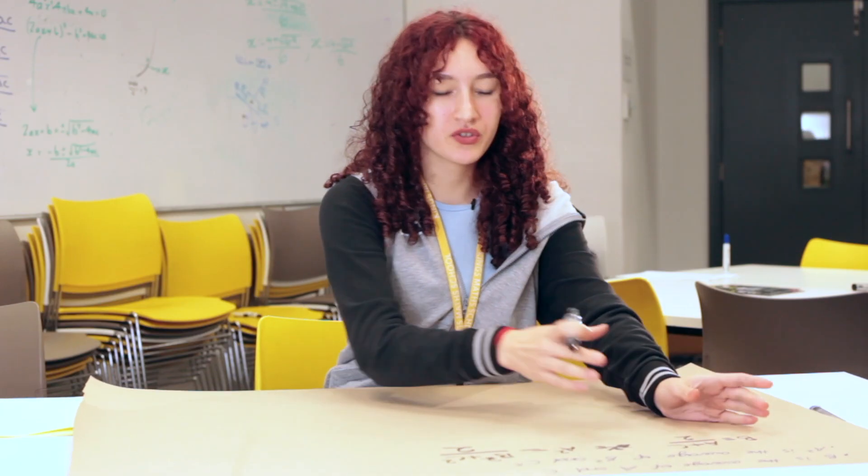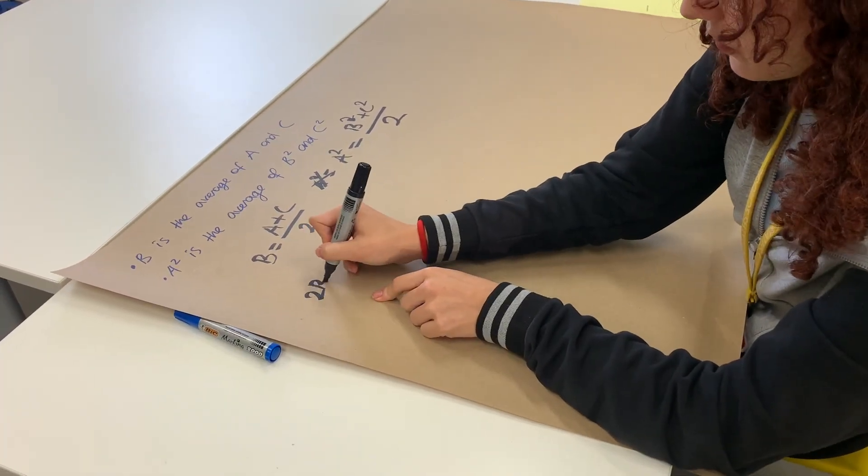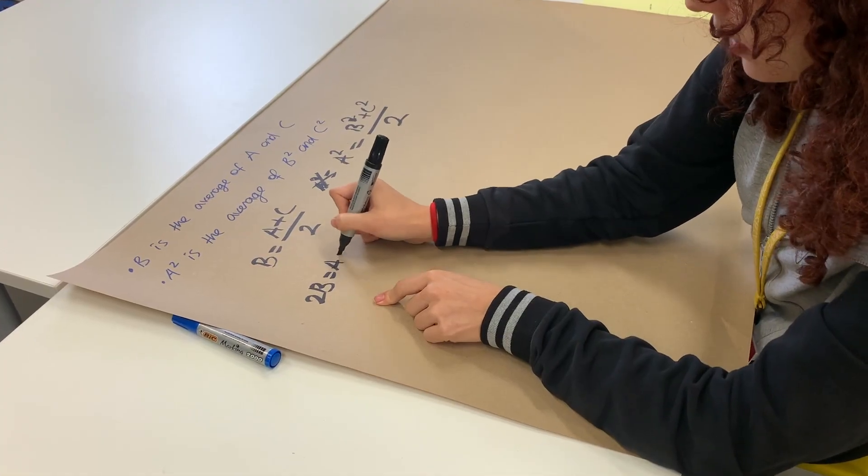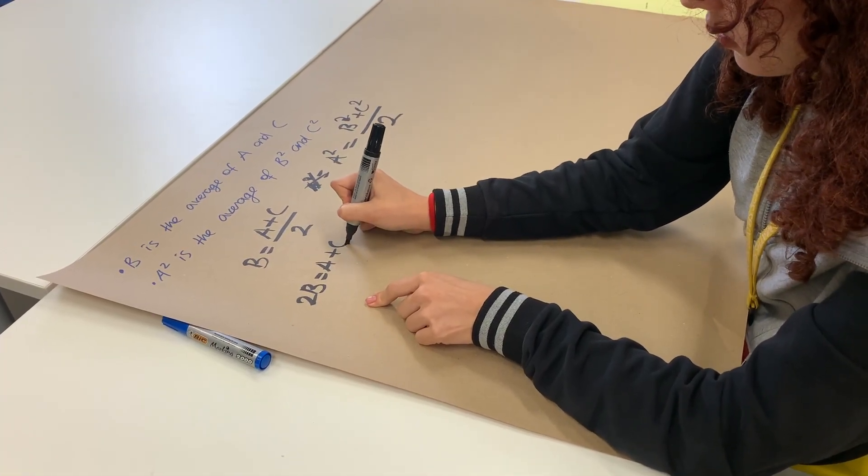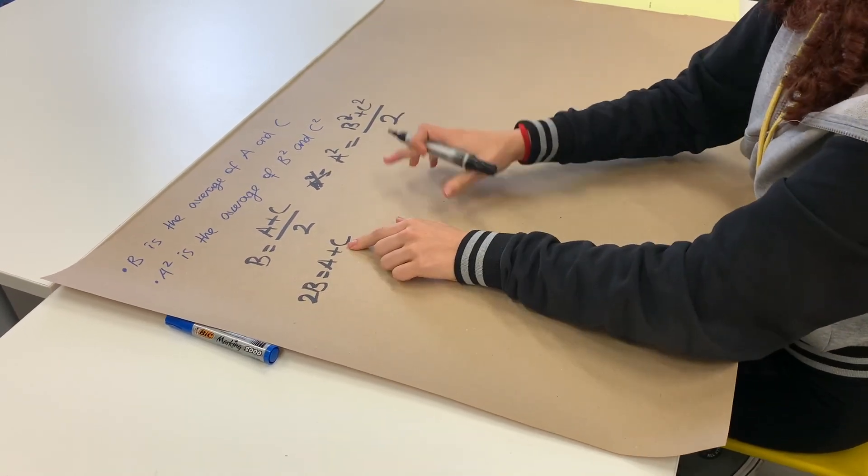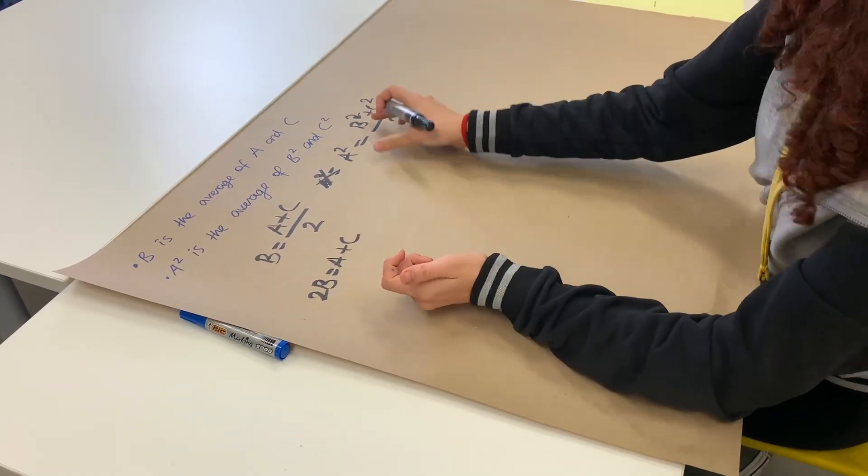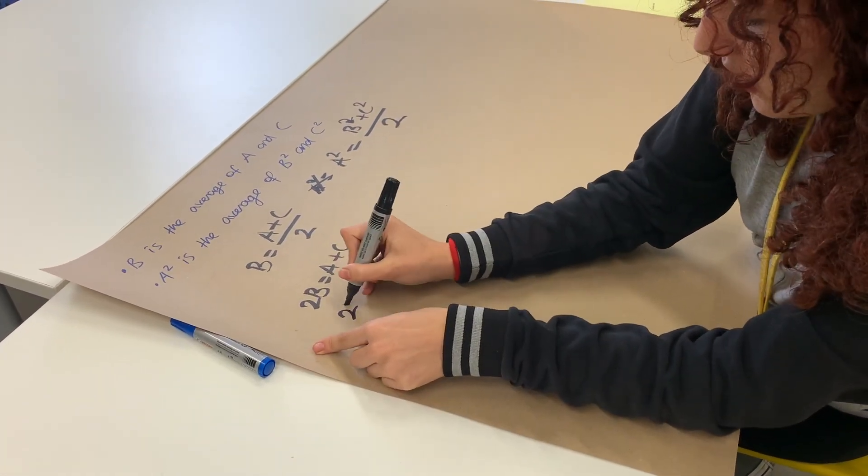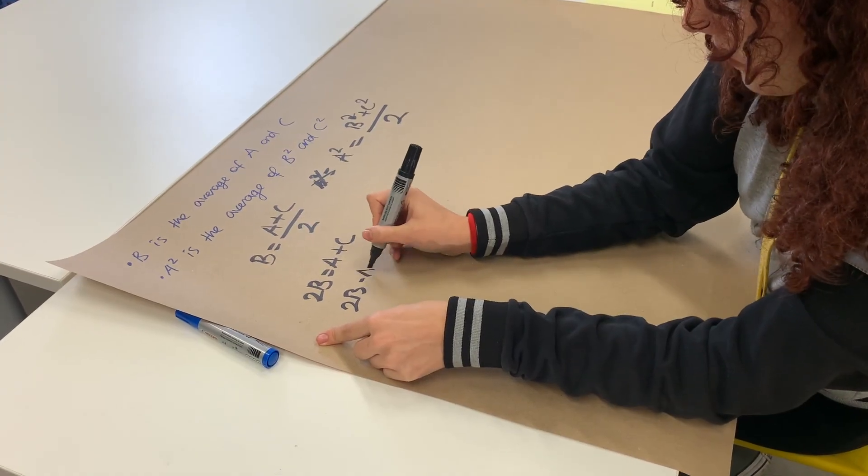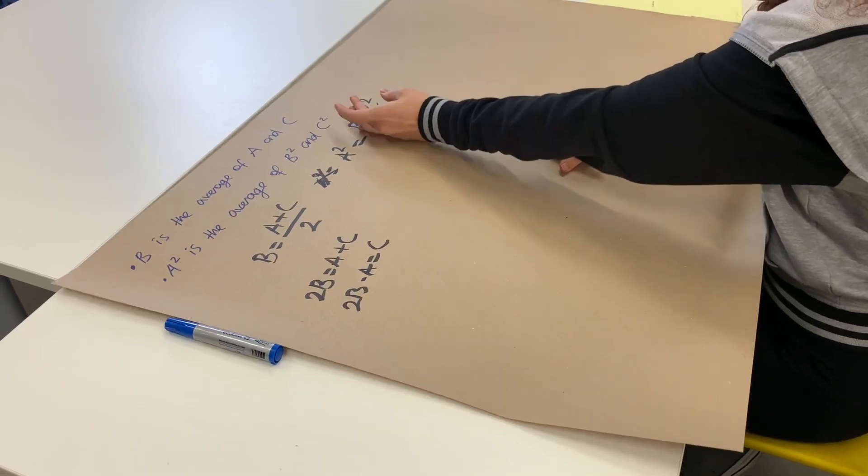So I want to rearrange this equation so I can plug it in the second equation I have. So we can just say if we times both sides by two, we can say 2B is equal to A plus C. And I want to rearrange it so everything equals to C. You can just choose whichever. It doesn't really matter. So we're going to say 2B minus A is equal to C. Now we have a nice expression that we could just plug in instead of C.